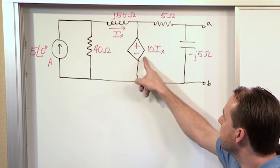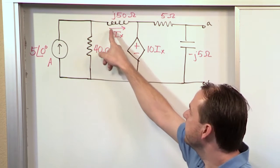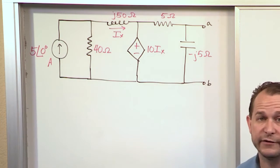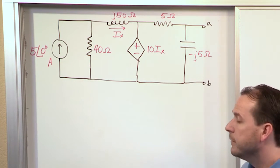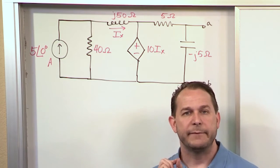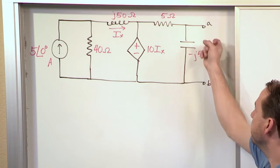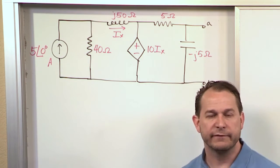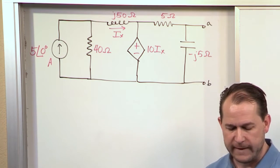Now, the value of this voltage is 10 times I sub X, where I sub X is whatever the current is flowing through that inductor. So, again, break it up into steps. First step, find the open circuit voltage between A and B. That's going to be the Thevenin equivalent voltage.